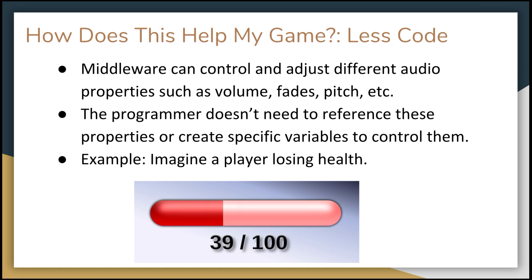So let's talk about how middleware benefits the game specifically. First: less code. Because middleware can control and adjust different audio properties, the programmer doesn't need to reference them or create specific variables to control them, which saves a huge amount of coding and debugging time. For example, say you had a player with a health variable - they take damage and lose health - and you wanted a heartbeat sound to speed up as health gets lower.